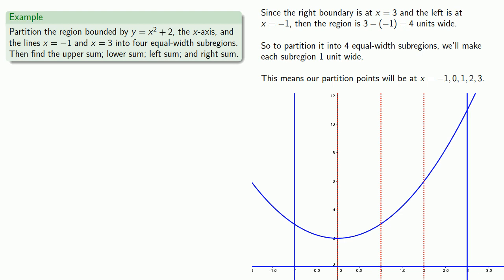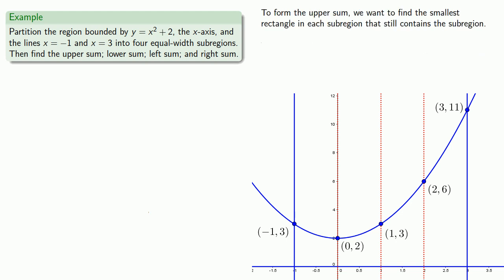For this problem, the bottom is always going to be along the x-axis, and the top is always going to be along our curve. To form the upper sum, we want to find the smallest rectangle in each sub-region that still contains the sub-region. So in this first sub-region, we might start with a big rectangle and then shrink it down so that it just barely contains the region.